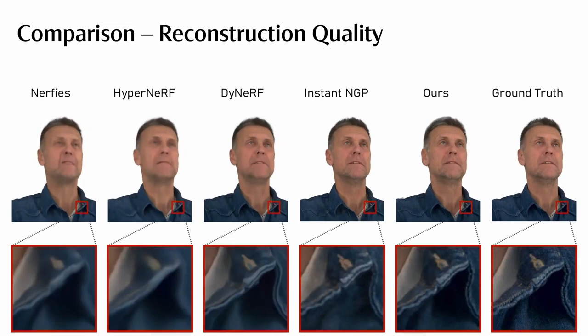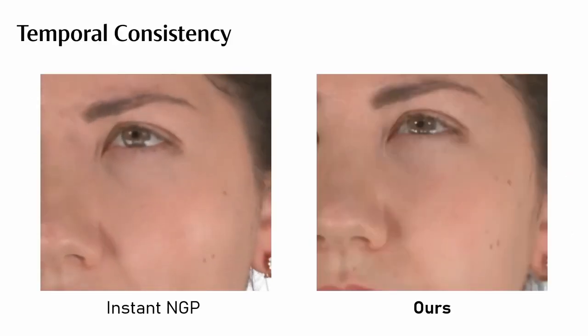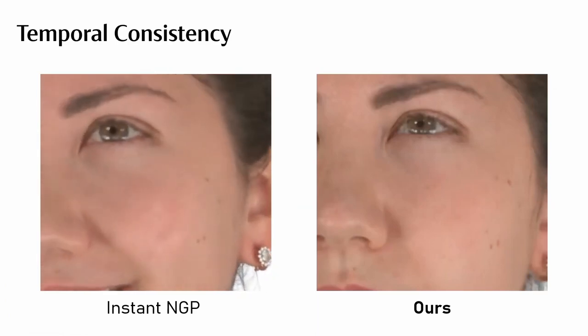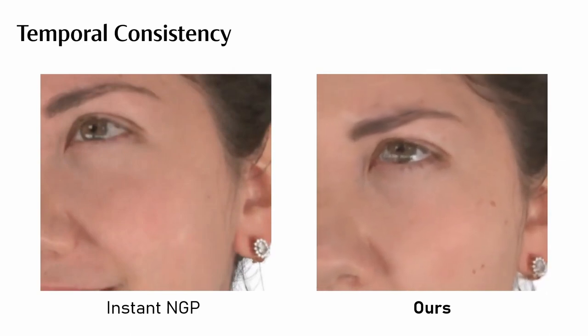Note that the instant-NGP baseline is trained separately on every time step and has no notion of time, which leads to temporal inconsistencies. This causes severe flickering artifacts for the instant-NGP baseline. In contrast, our method provides a smooth temporal experience.